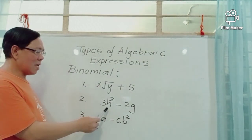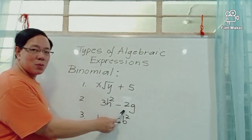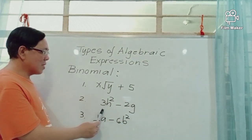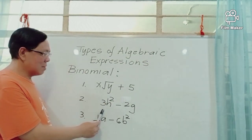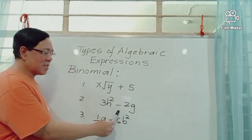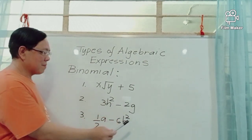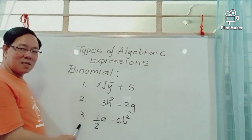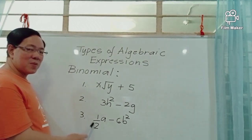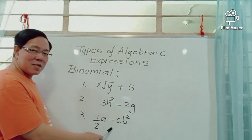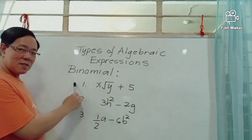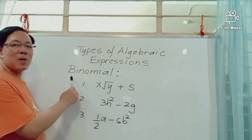Another example is 3h squared minus 2g, which is a binomial because it has two terms. The first term is 3h squared and the second term is negative 2g. A third example is one-half of a minus 6b squared, also a binomial with two terms. These algebraic expressions are called binomials.